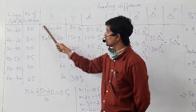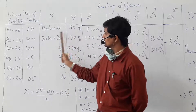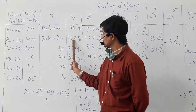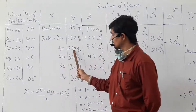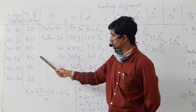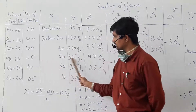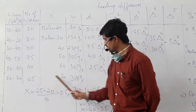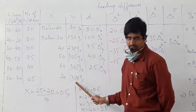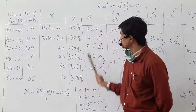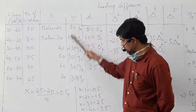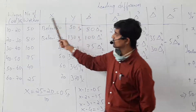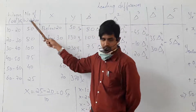And now, below 30, we have to add cumulative frequencies. Below 30: 50. Below 30: 50 plus 80 = 130. Then 130 plus 100 = 230. 230 plus 75 = 305. 305 plus 40 = 345. 345 plus 25 = 370.